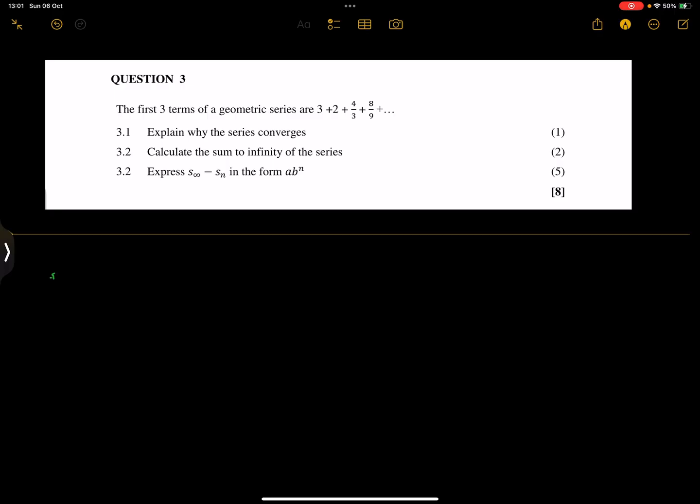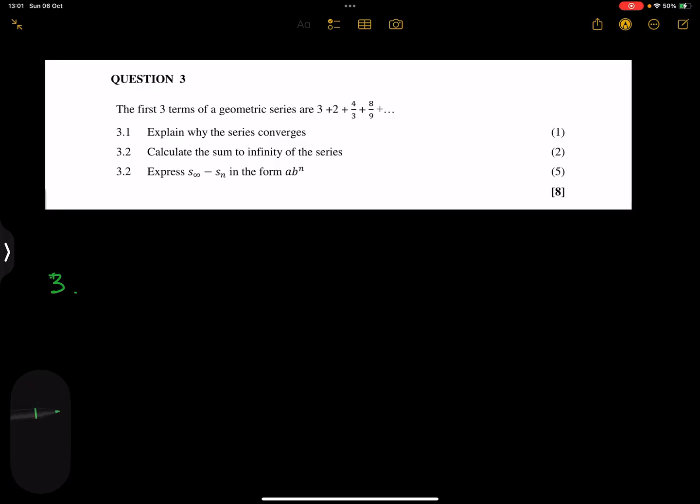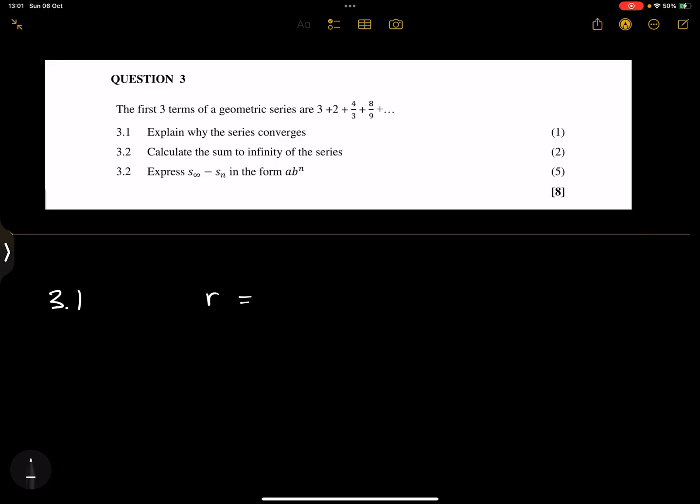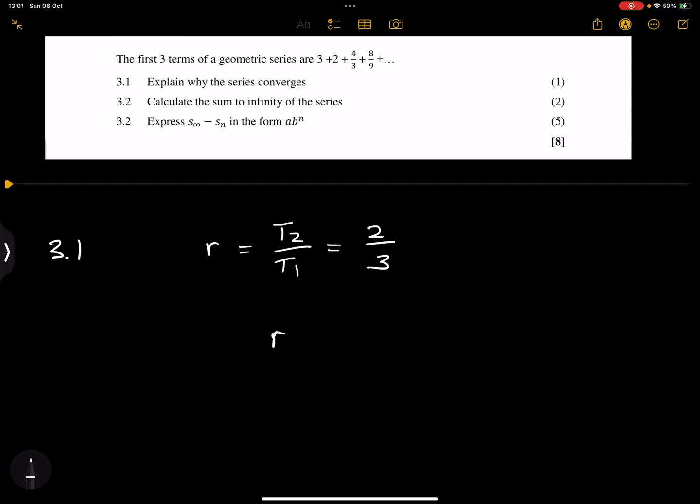So remember, when we talk about a convergent series, we simply mean that the R value—so if we were to calculate the R value, what would be our common ratio? We can say T2 divided by T1, and so that would be 2 over 3. So that's our common ratio. We can state that R is actually less than 1 and it is greater than negative 1. So that is the reason that it converges.